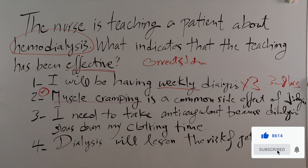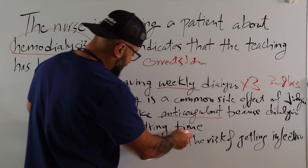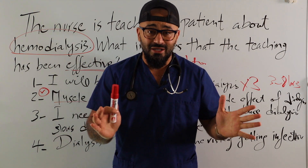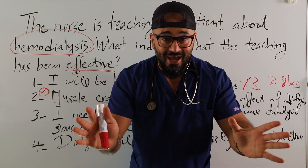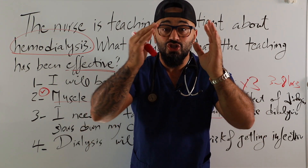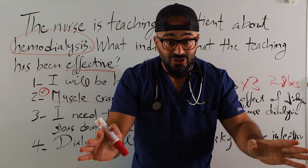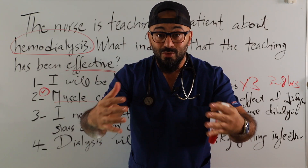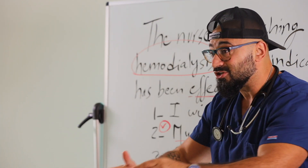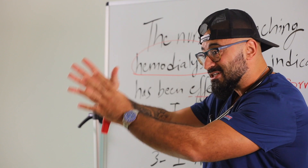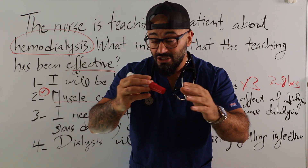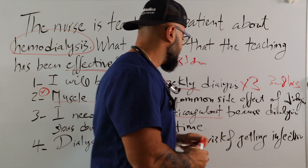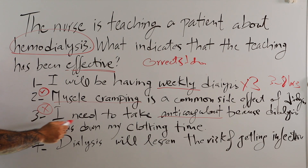Option number three: 'I need to take the anticoagulant because dialysis slows down my clotting time.' The patient needs to take anticoagulant because dialysis decreases clotting time — that is a wrong statement. During dialysis, the dialysate we are using already has clotting factors, so you don't need any extra anticoagulant during the session. Sometimes they use heparin with hemodialysis because you're using an external machine — taking the patient's blood out, cleansing it, and giving it back. They use heparin in the tubings so blood does not clot in the machine. But the patient does not need to be on anticoagulation — this is a wrong statement.